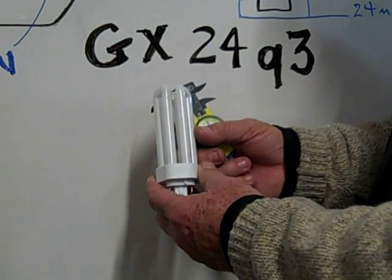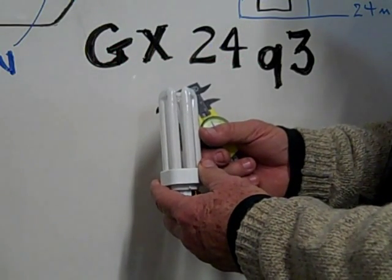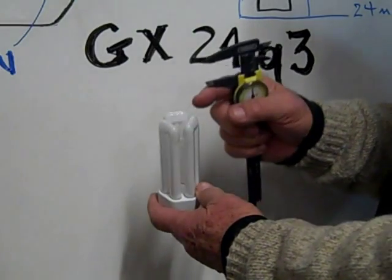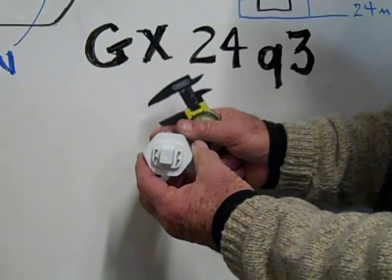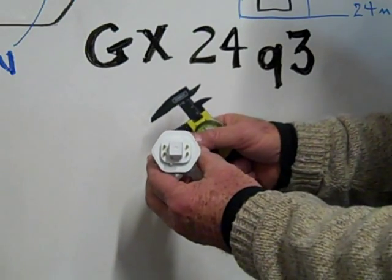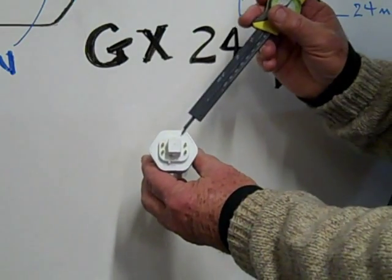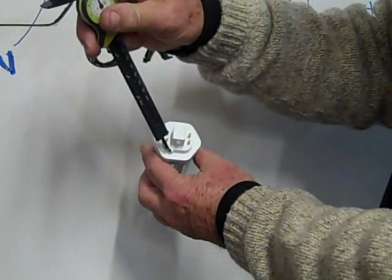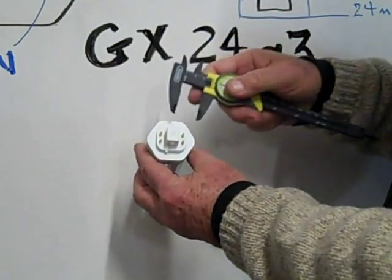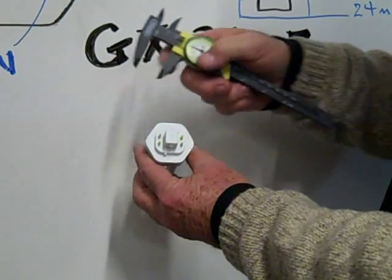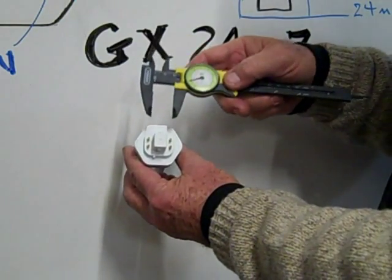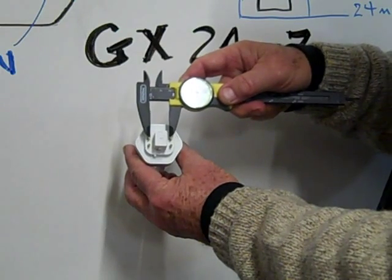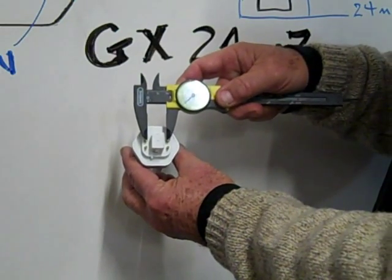This is the triple tube compact fluorescent. You can see it has three tubes and it's the GX24Q3 base, the offset guides, and the four pins that are 24 millimeters apart on center.